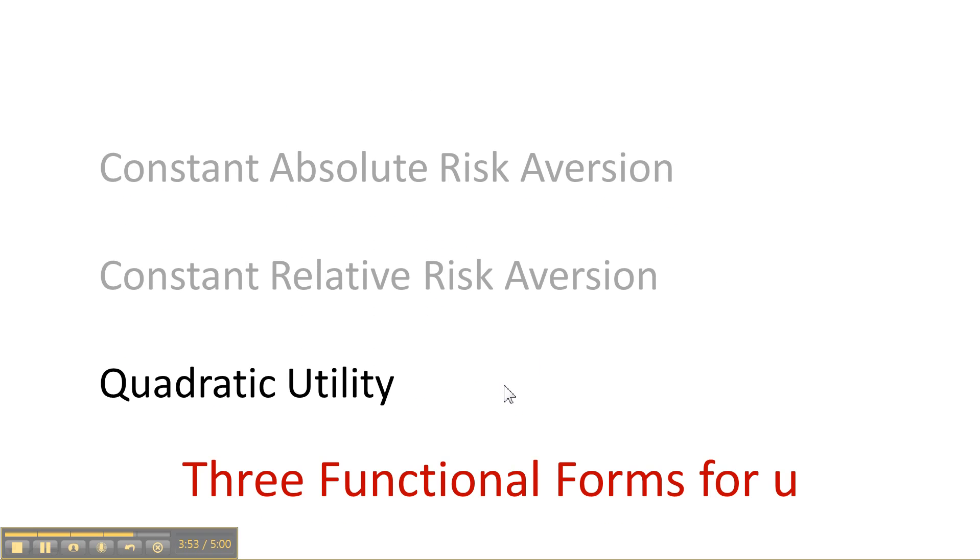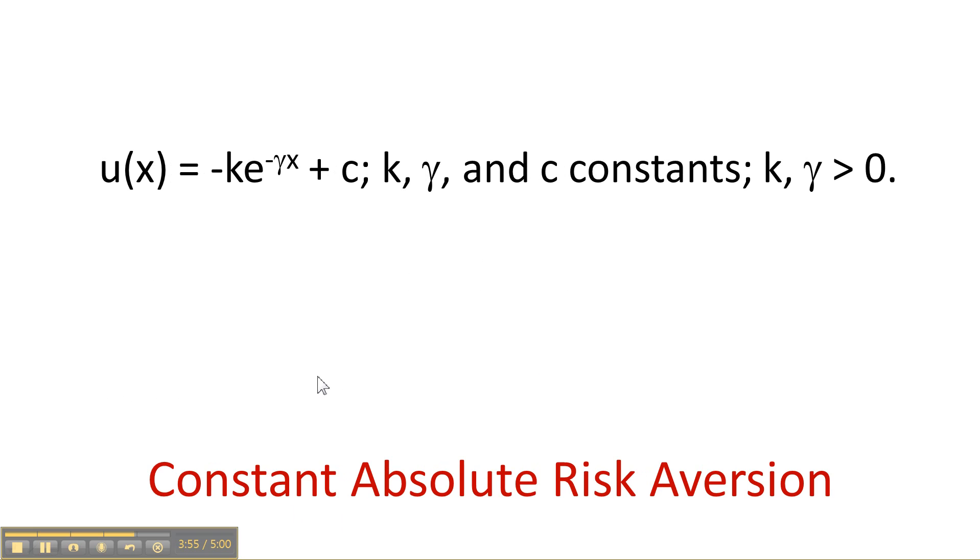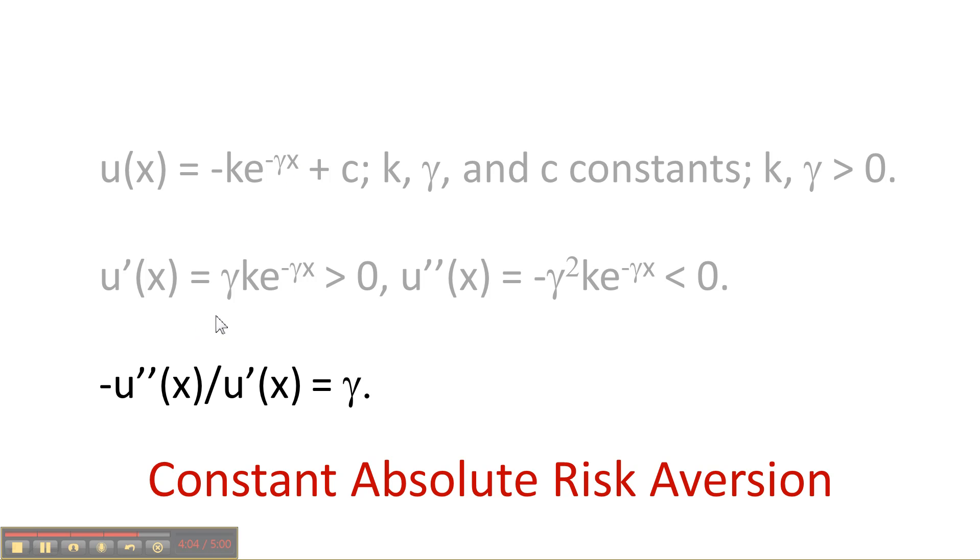These are very useful to know. Constant absolute risk aversion is a negative exponential with the parameter gamma. And just so we look at the absolute risk aversion is measured by this minus the second derivative over the first derivative. And if you do the algebra, you see that that is gamma. So that one is easy.